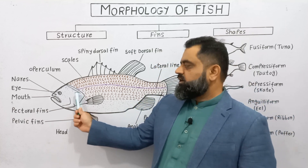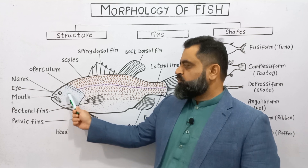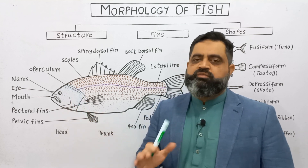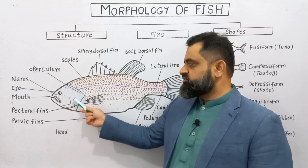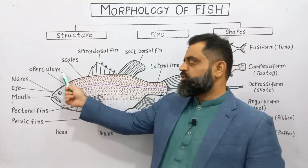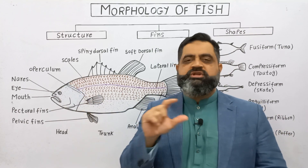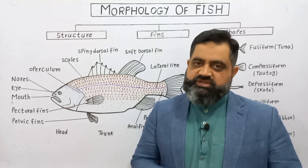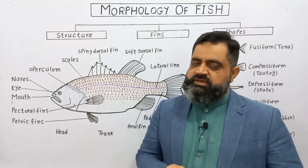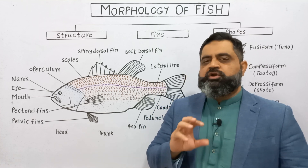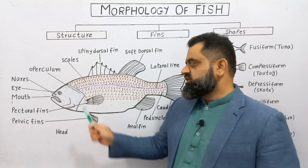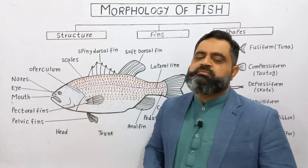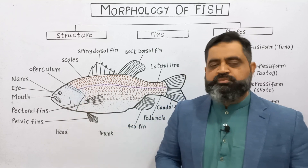The anterior end, composed of the head, usually has a pair of bony structures on both sides of the head known as the operculum. These are bony structures present on the lateral sides of the head. The operculum usually covers the gills which are present just underneath these bony structures.